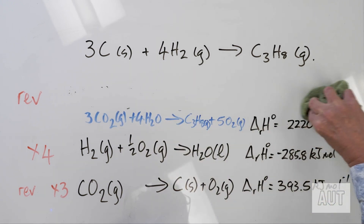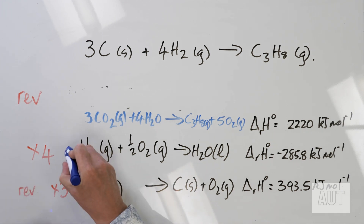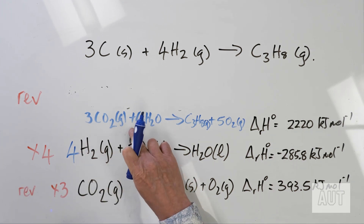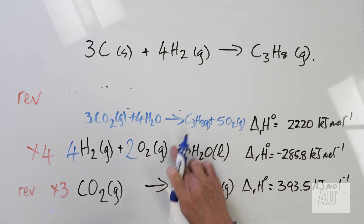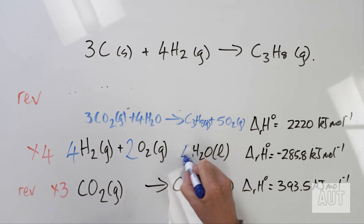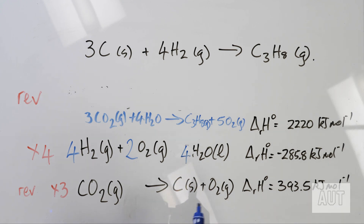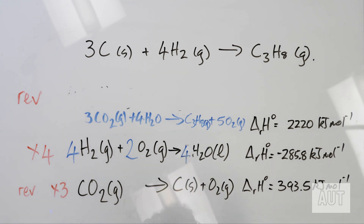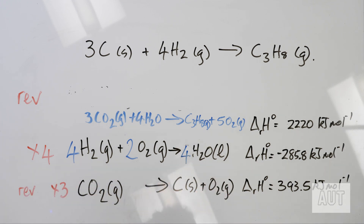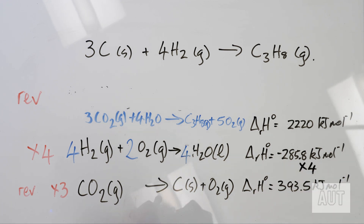For the second equation, we're simply multiplying by four. So H₂ becomes 4H₂, 1.5O₂ becomes 2O₂ (since 0.5 × 4 = 2), giving 4H₂O. When we multiply the equation by four, we also multiply the value of delta H by four.